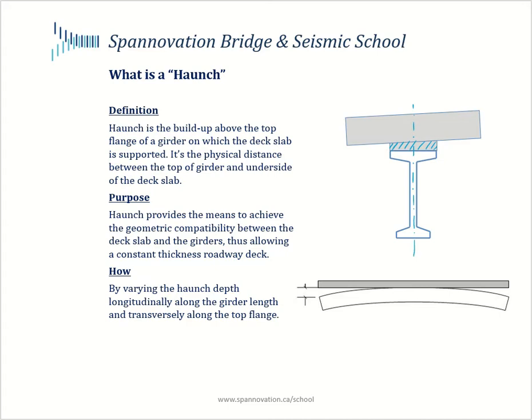You could also say that the haunch is a physical distance between the top of the girder and the underside of the deck slab. On steel girder bridges this space is also referred to as a fillet.